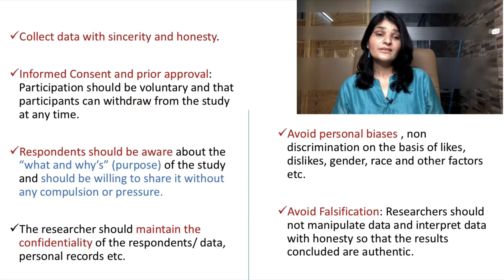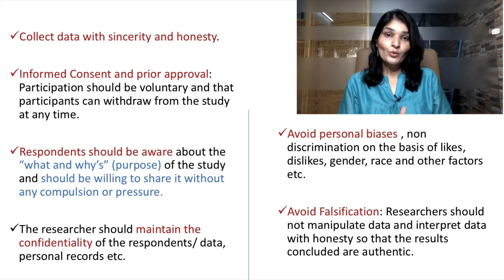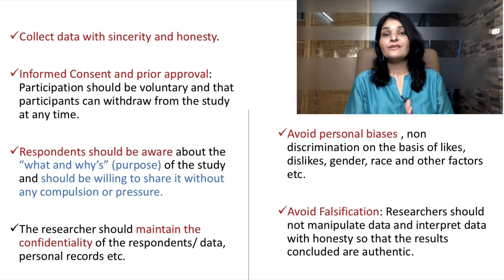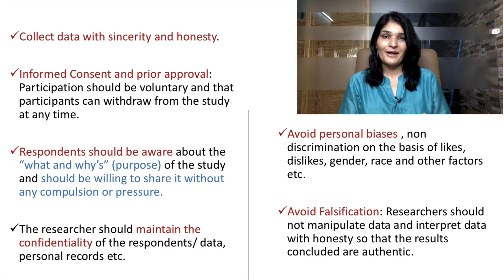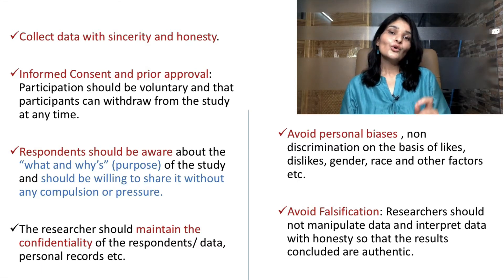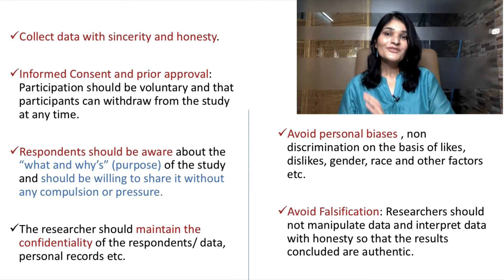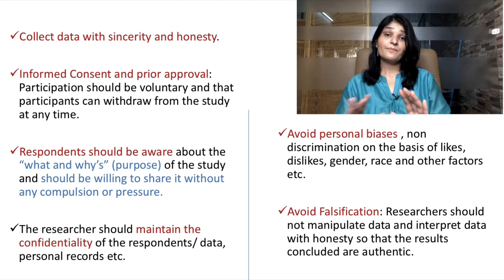Avoid personal biases — non-discrimination on the basis of likes, dislikes, gender, race, and other factors. Researchers are also human beings with likes and dislikes, but a real researcher does not let their biases come between the research. For example, if a researcher is studying belief systems — theist, atheist, or agnostic — and the researcher themselves is a theist, they should not impose their own opinions. There are so many biases related to gender, religion, and caste, but research ethics say these biases should not disturb the research work.